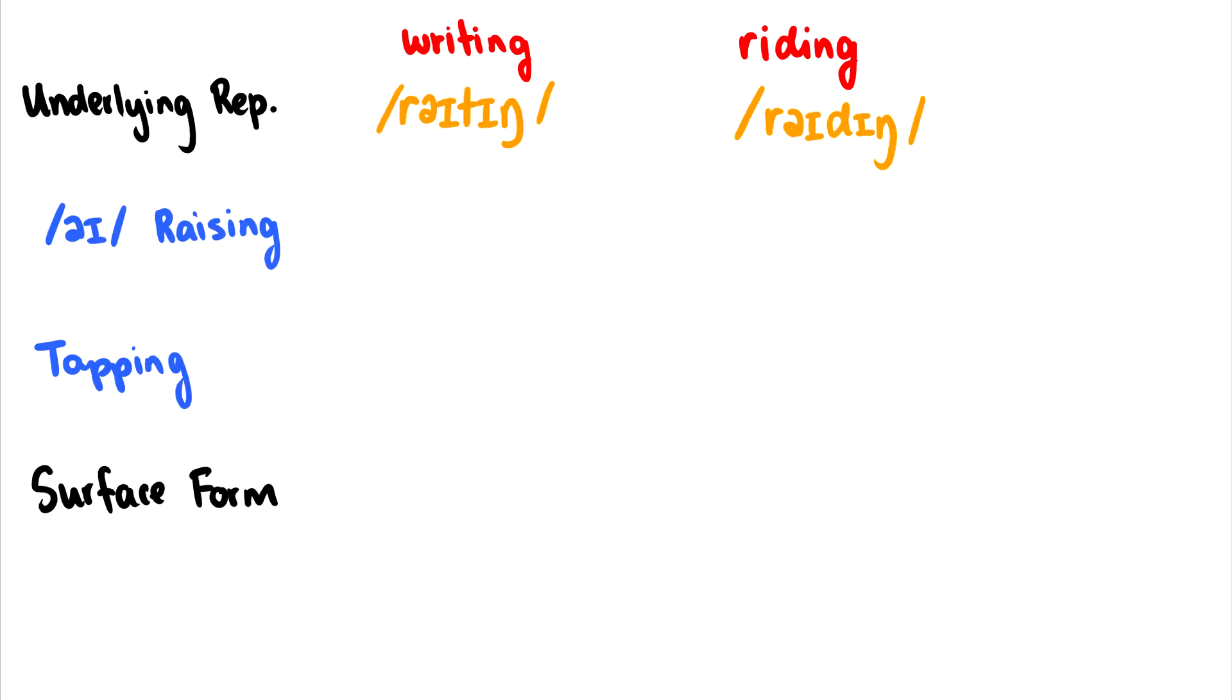So let's look at two words. I'm going to pronounce them with a lot of emphasis first: writing and riding. I'm still going to do raising when I say that. But essentially, the underlying forms or the underlying representations of these words look nearly identical.